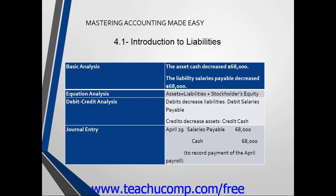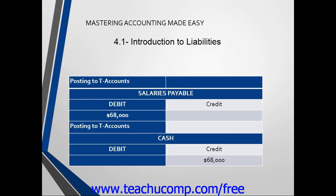Also, some companies put notes at the bottom of their journal entry. In this example it says, to record payment of the April payroll. The next step would be posting to T-accounts. Salaries payable is debited $68,000 and cash is credited $68,000.